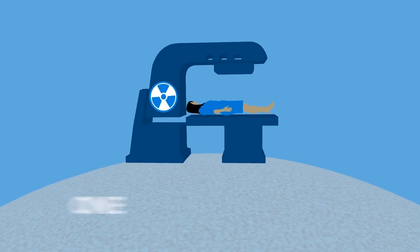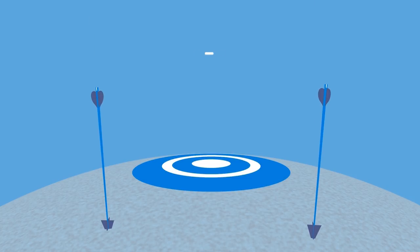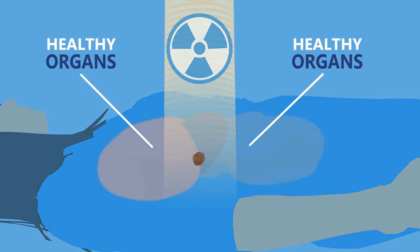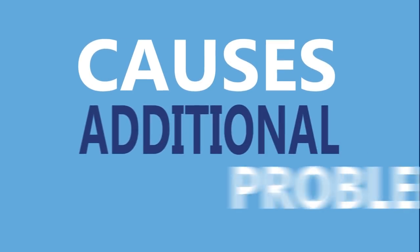However, this method has one major disadvantage. It's not wholly accurate when targeting the tumour site. While the beams largely target the tumour, they can also kill cells in healthy surrounding tissue and organs, which causes additional problems.